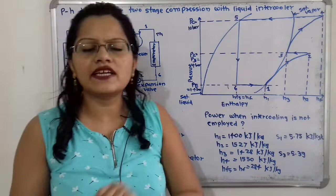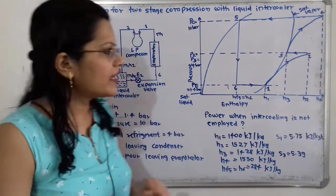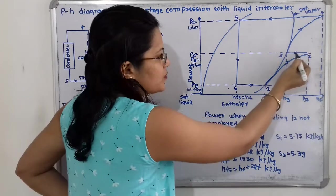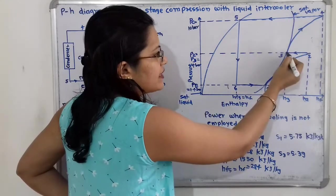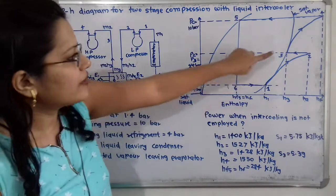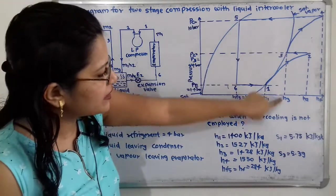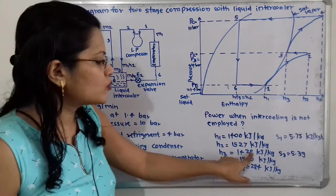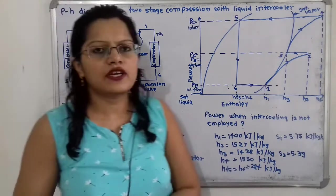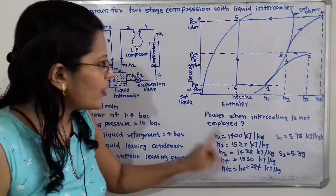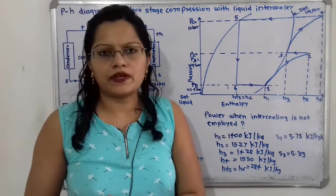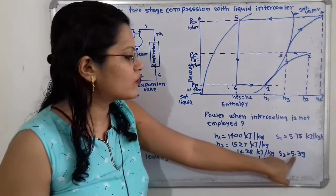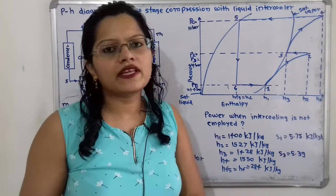The cooling process in the intercooler takes place at constant pressure (4 bar) back to the saturated vapor line. Extending point 2 horizontally to the saturated vapor line gives point 3. Reading off the enthalpy axis, h3 = 1428 kJ/kg.